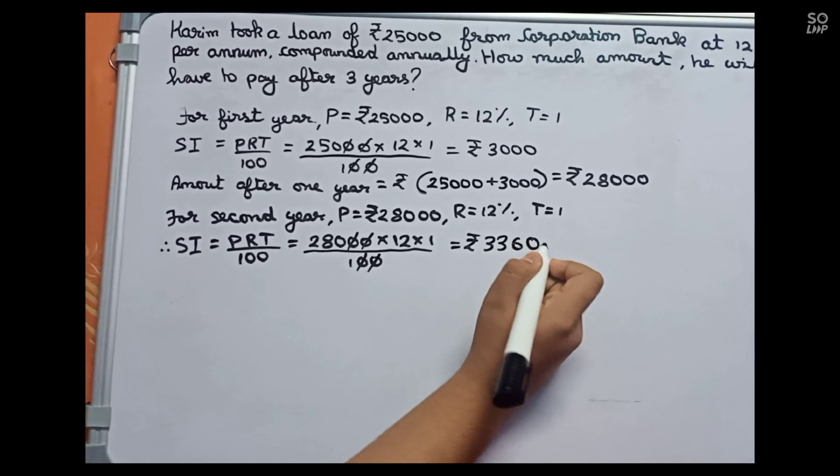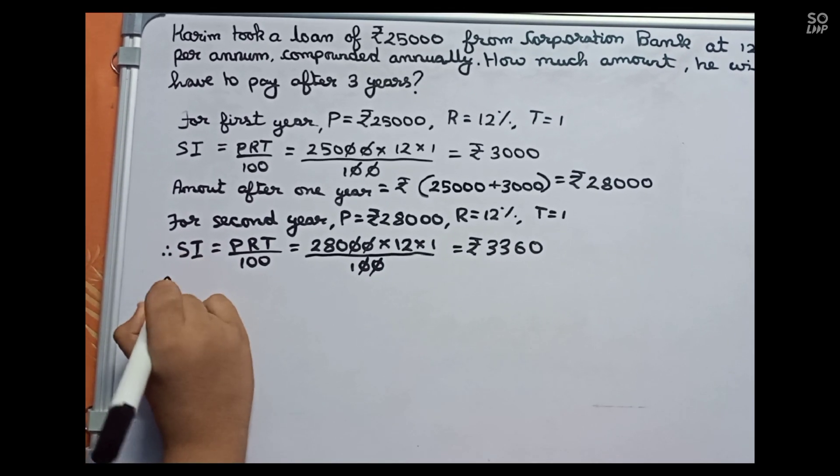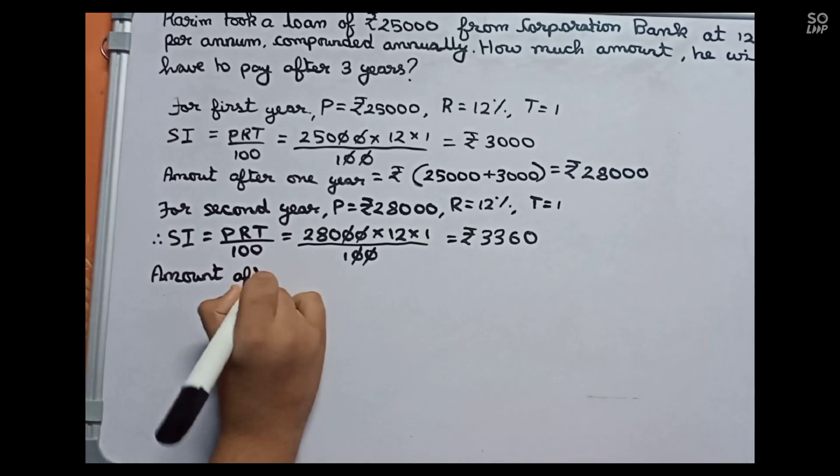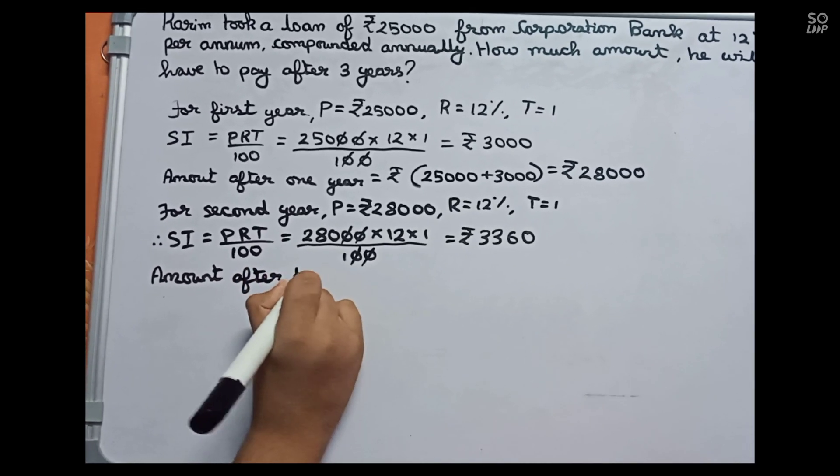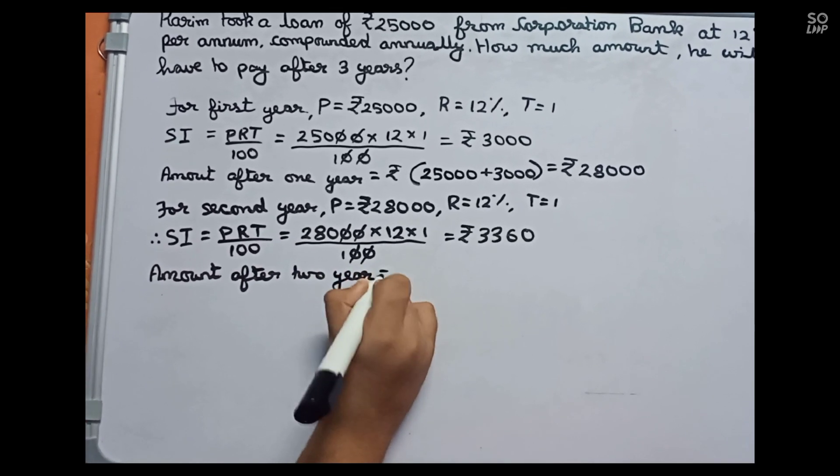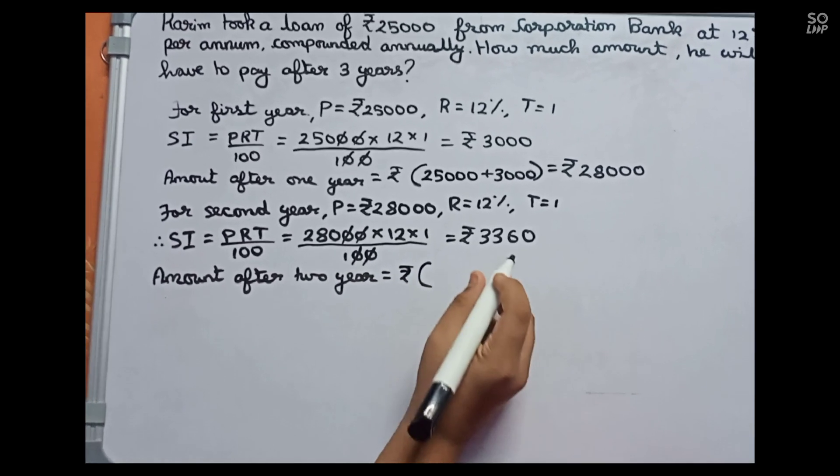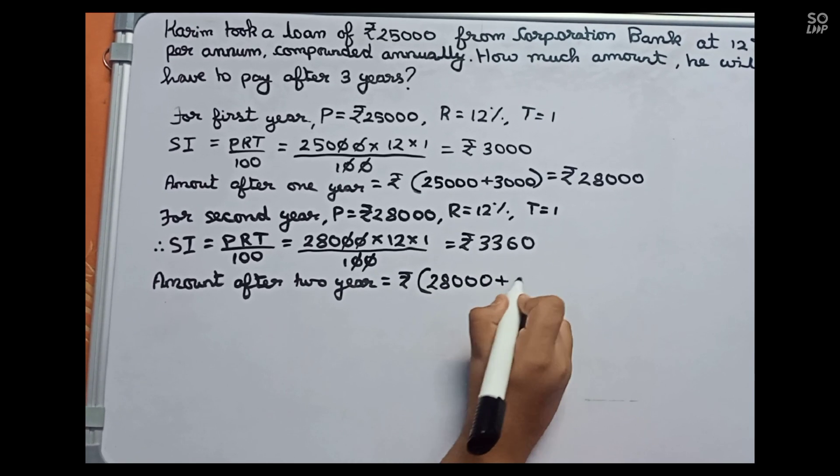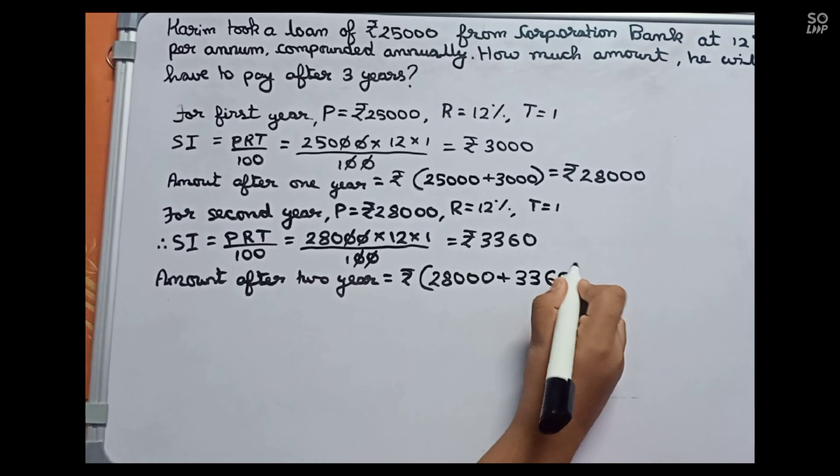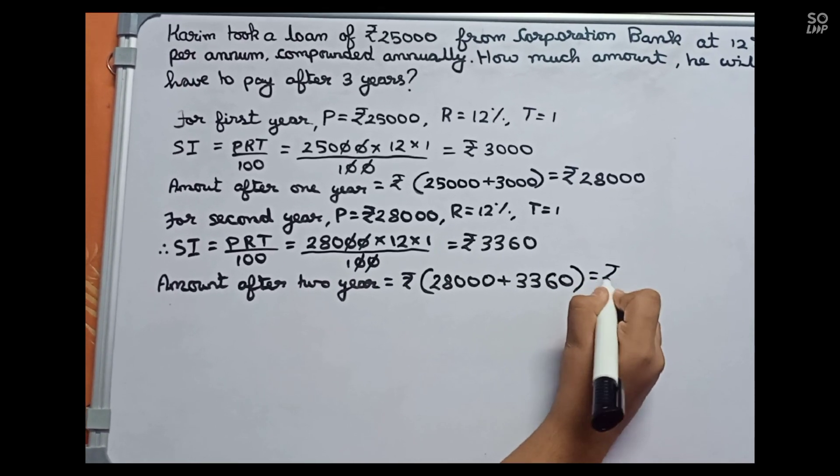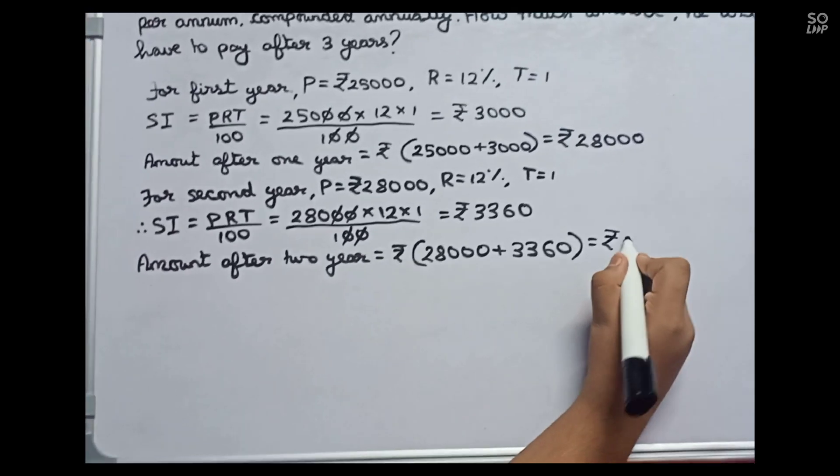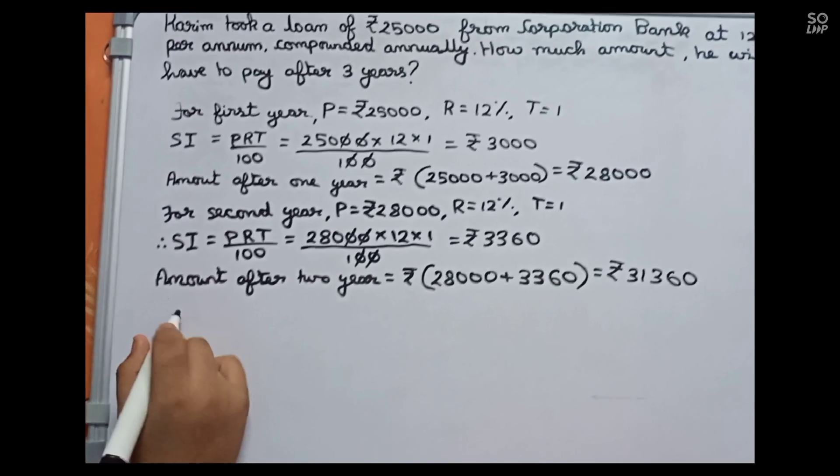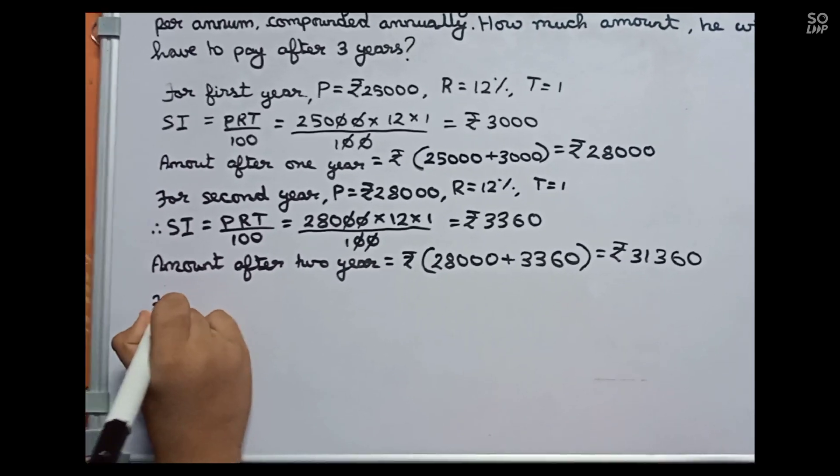This is our SI for second year, so amount after two years equals to rupees 28,000 plus 3,360, which becomes 31,360. I found SI for second year, therefore we will write for third year.